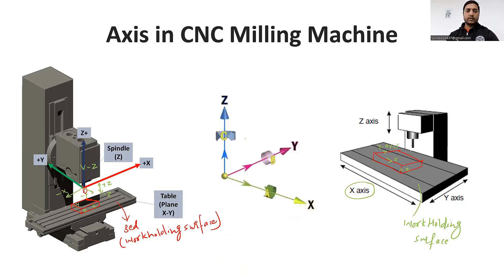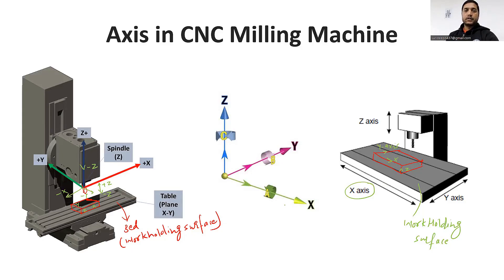In summary, we have three translational axes X, Y, and Z. Rotation about X is axis A, rotation about Y is axis B, and rotation about Z-axis is axis C. So I hope the axes in CNC machines are now clear.